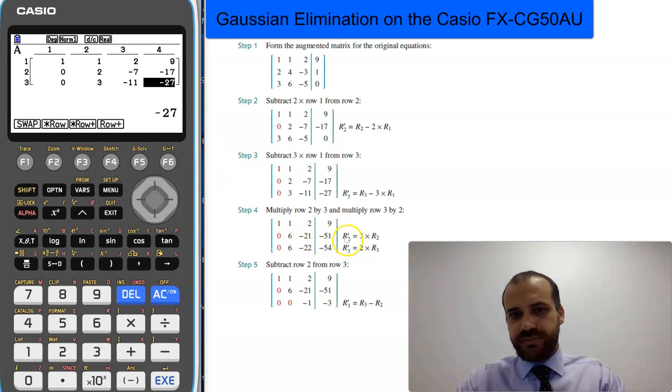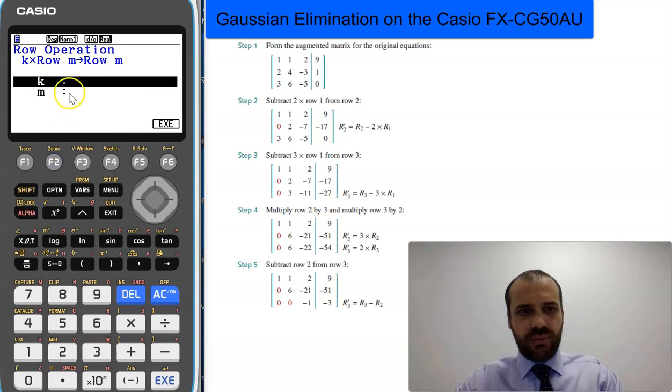Now this says row dash 2 equals 3 times row 2. So we don't have to use that button. We just use this button here. We want to multiply row 2 by 3.